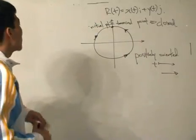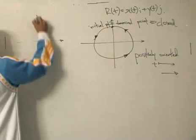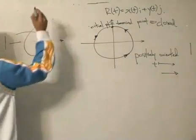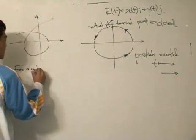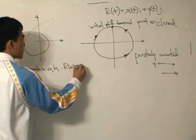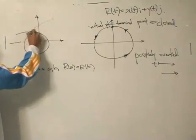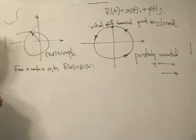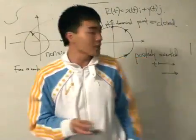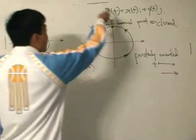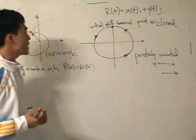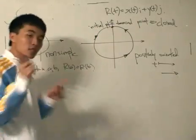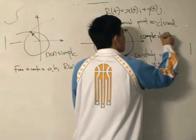We have one more to define: simple and non-simple. A curve is non-simple if it crosses itself. For a certain pair of parameter values A and B, the position vector would be the same — they meet at a crossing point. If this is the case, it is called non-simple. A simple curve simply doesn't cross itself. However, when we have a closed curve, the initial and terminal points meet — this is the only exception. If the curve only crosses itself once at the initial and terminal points, it is still called simple, and it is called a simple closed curve.